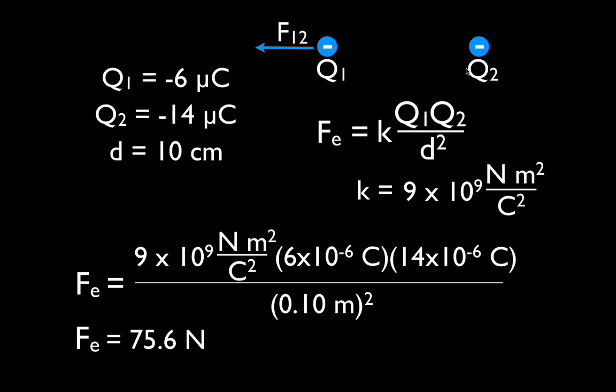Now, it is also true that charge number 2 feels an equal but opposite force. So, the force on charge 2 is 75.6 newtons also, but the direction of that force is to the right. And this problem we were asked to find, what's the direction of the magnitude of the force on charge 1 from charge 2. So, I think that's really pretty straightforward. Once you have the values and the equation and the constant, just plug everything in, do the math.